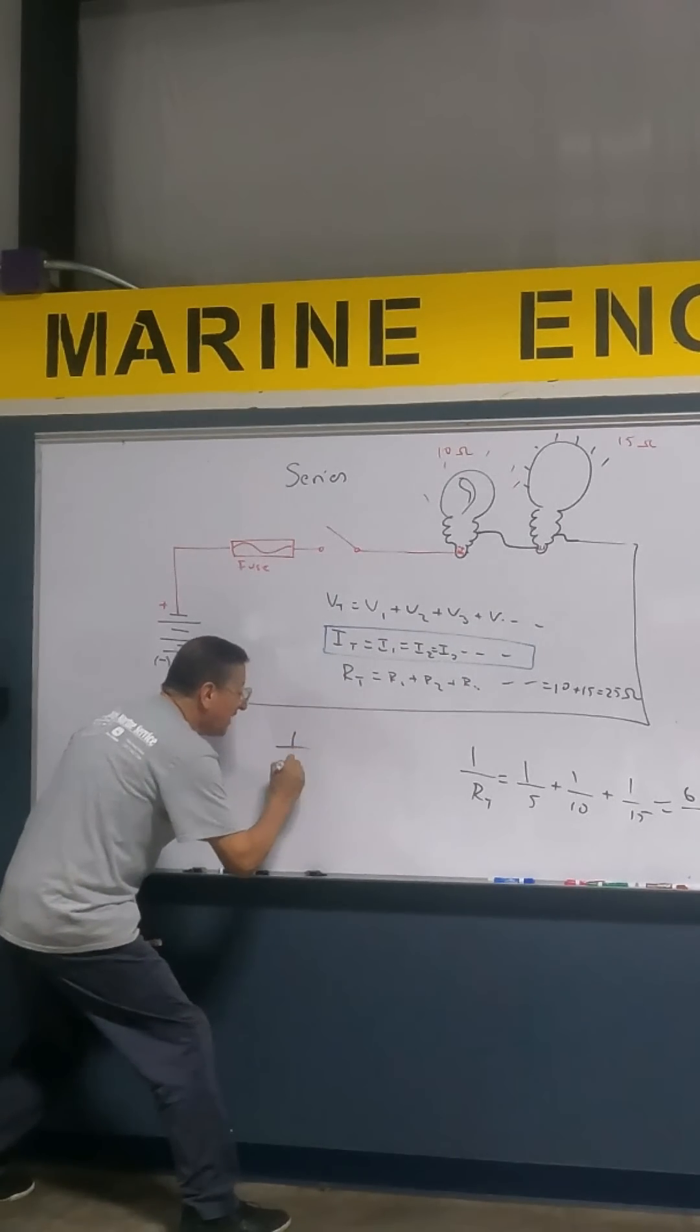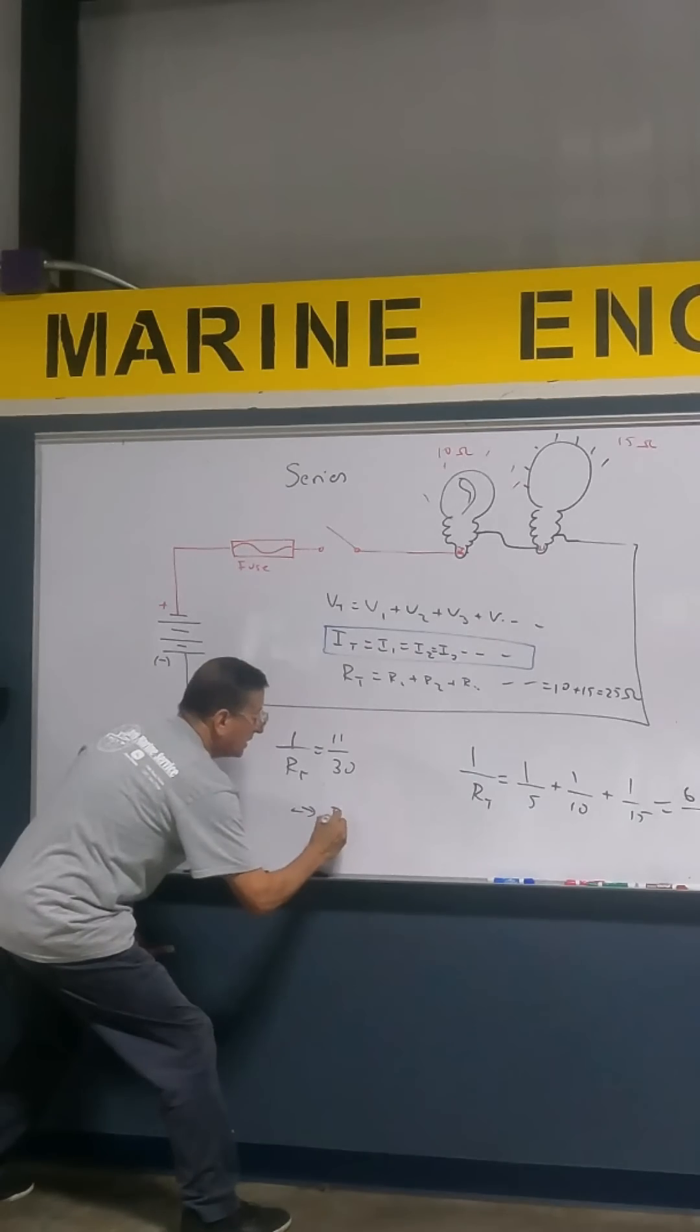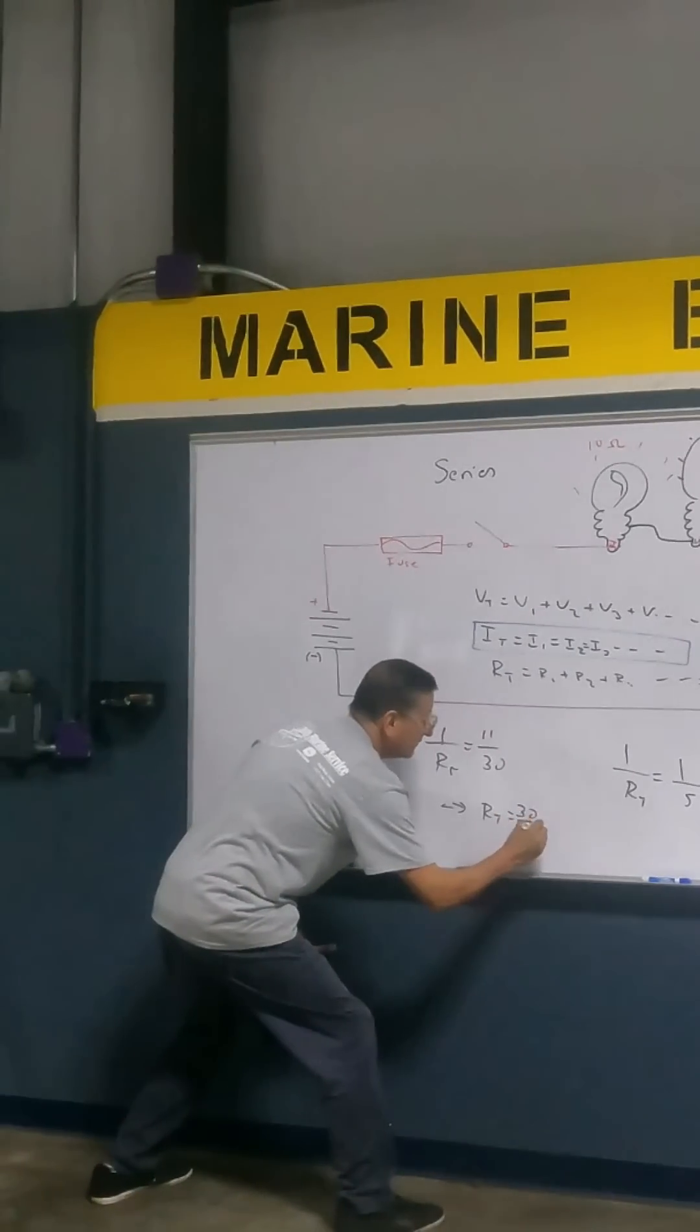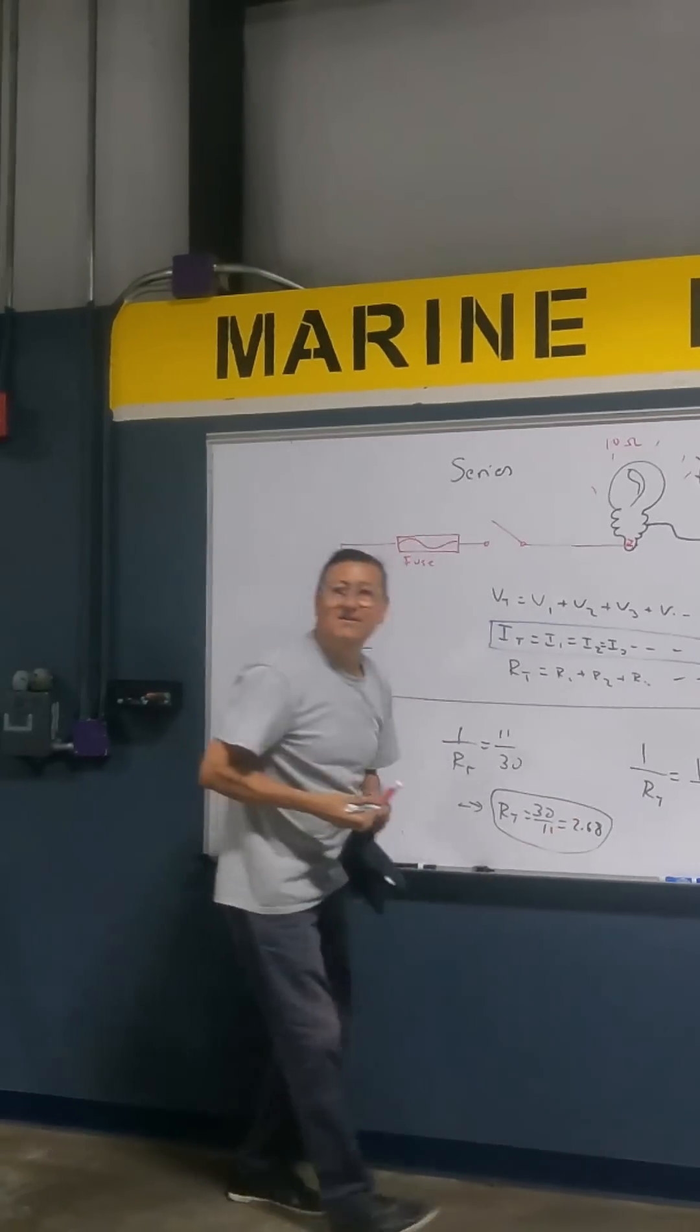Look at this. 1 divided by RT is equal to 11 divided by 30. Then RT is 30 divided by 11 is 2.68. Do you like it?